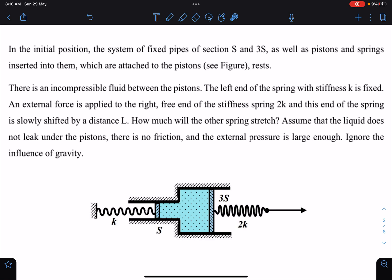spring is k, it is fixed here, and this one is 2k. Now we are applying a force here, and please see the force magnitude is not given. The free end of the stiffness spring 2k, this end of the spring, is slowly shifted by a distance of L. Very slowly we are pulling it by a